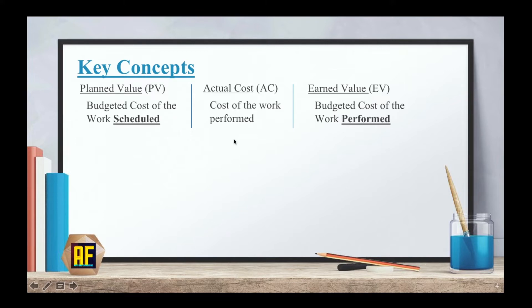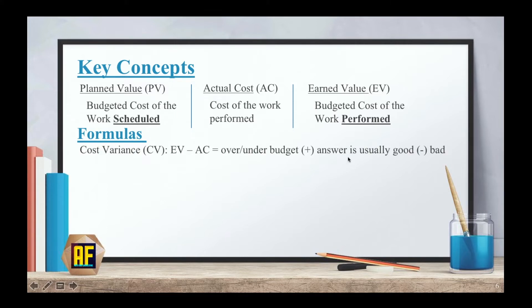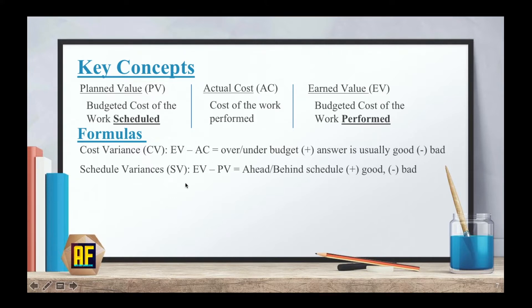So it's not just what you planned versus what it actually costs. Let's go over some formulas. The cost variance, which is the earned value minus the actual cost, will tell me if I'm over or under budget. Usually a positive answer is good and a negative answer is bad. My schedule variance, which is the earned value minus the planned value, will let me know if I'm ahead or behind schedule — again, plus is good, minus is bad.